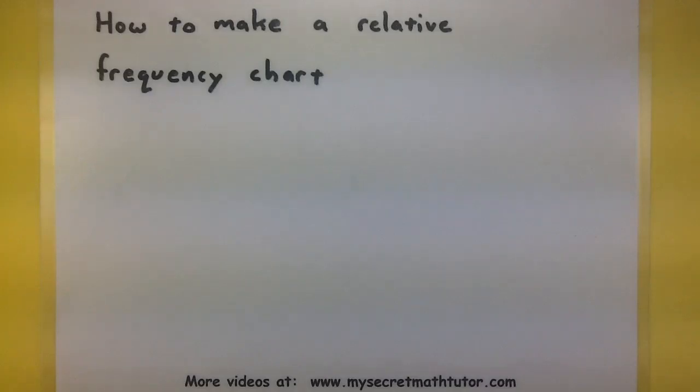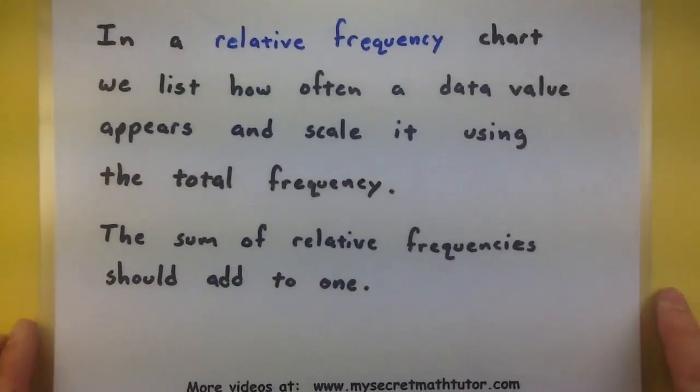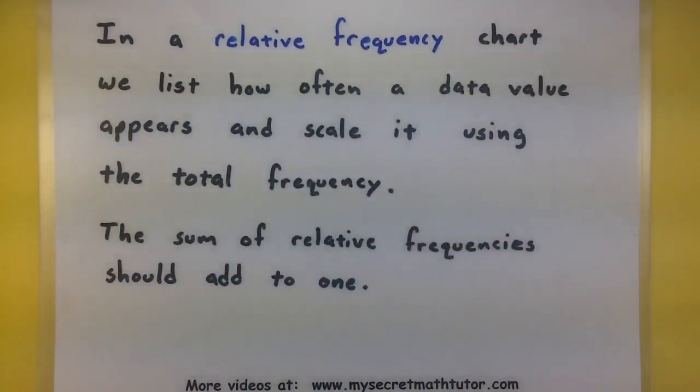Let me be a little bit more specific about what we will do. So in a relative frequency chart, we definitely want to list out how often we see each of our data values appear. Then we'll take our total frequency and divide so we can get a relative frequency. When we're all done, we'll take the sum of all those relative frequencies and double check that they all add up to 1. In a sense, it's like you're finding a percentage of how often something will appear.